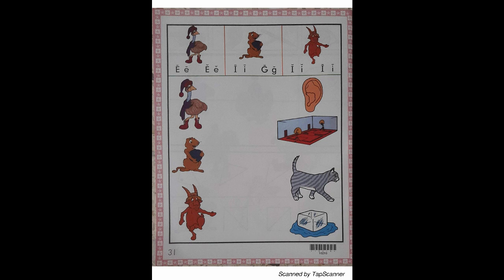Put your finger on the gerbil that is under the green line. Find the picture that has the same beginning sound as gerbil. With your pencil, draw a line from the gerbil to the J sound picture. Put your finger on the Ibex that is under the green line. Find the picture that has the same beginning sound as Ibex. With your pencil, draw a line from the Ibex to the I sound picture.